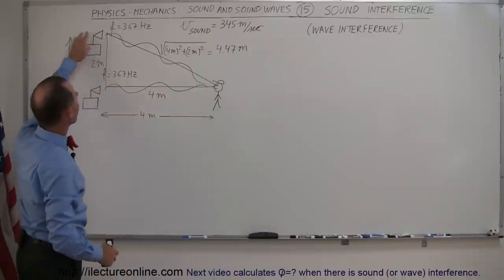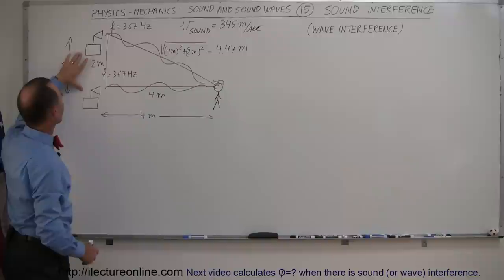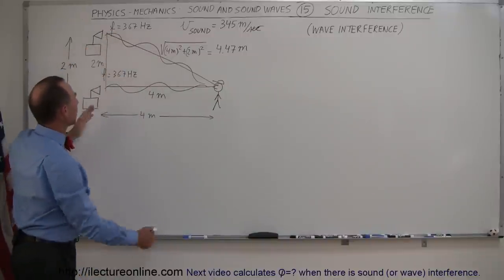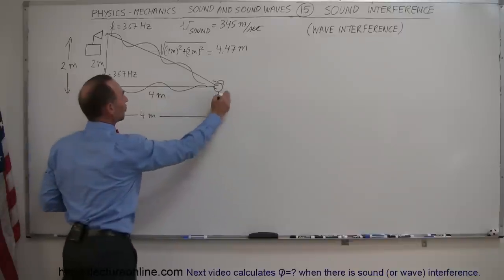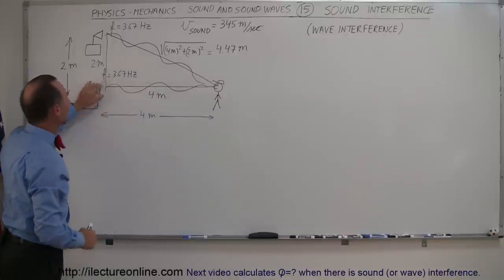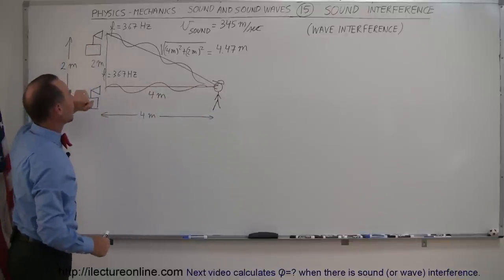So when sound waves come together from two different sources, let's say we have two sources putting out a sound wave at a frequency of 367 Hz. Let's say they're two meters apart, and there's an observer at the same height as one of the loudspeakers and two meters below the other loudspeaker.